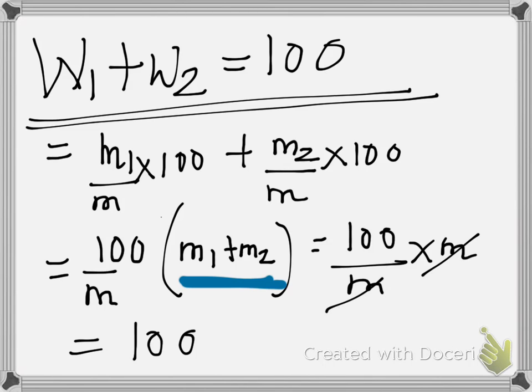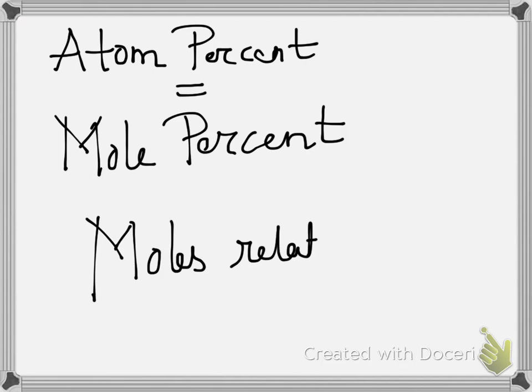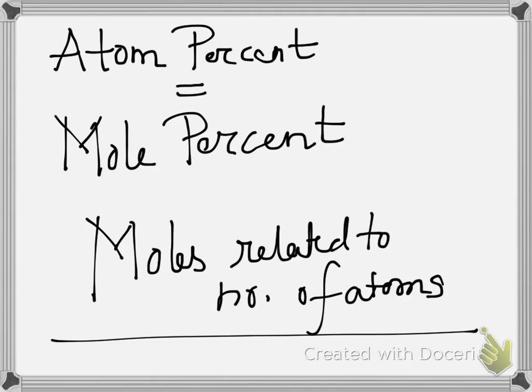Let us see what is atom percent. To understand the concept of atom percent, we need to understand that the atom percent for the solid solution is represented in the form of mole percent. If we find out the mole percent, it is nothing but the atom percent, because we know that moles is related to number of atoms through Avogadro's law. Let us try to find out the mole percent or the atom percent.